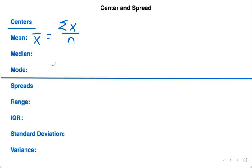Median, capital M, is your middle number. To find the position, we're going to use n plus one over two to find the position of the median.